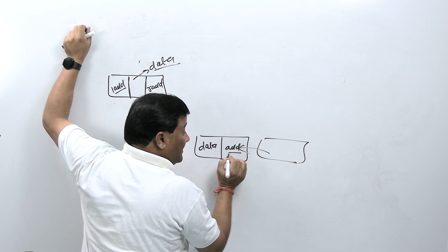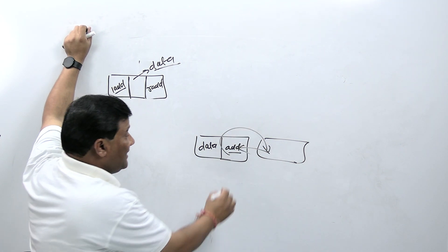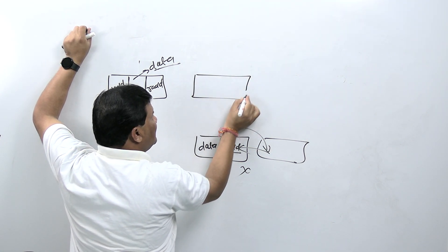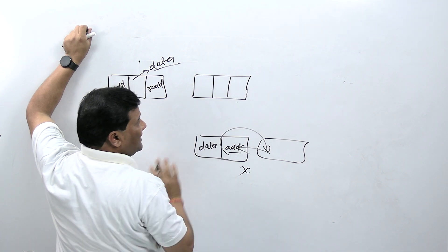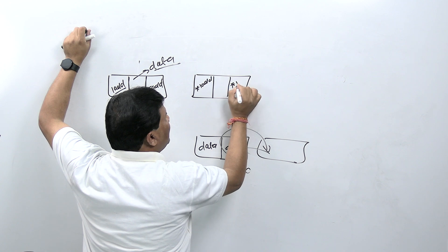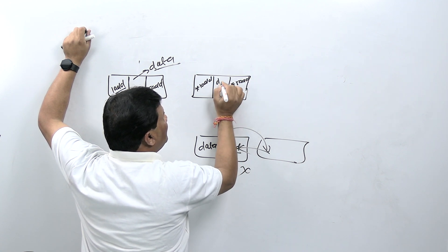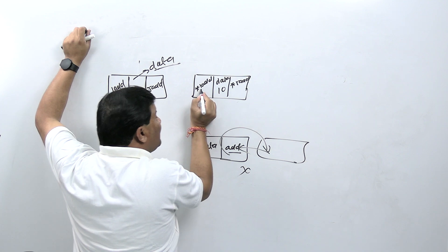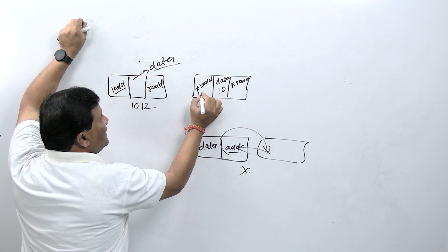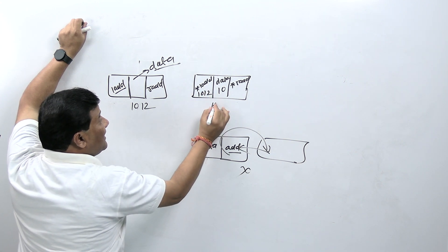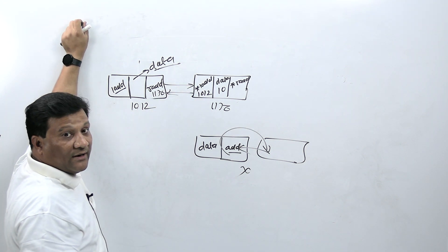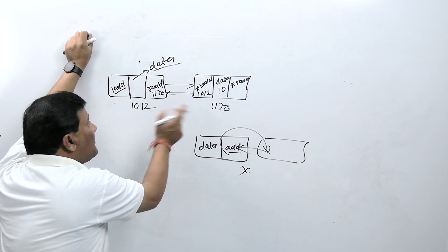In single linked list there was only one address to assign to next node, but you couldn't assign previous address. In double linked list, every node is made this way where every node has three parts: left address pointer, right address pointer, and data. If I store data here, left address pointer will store address of previous node.